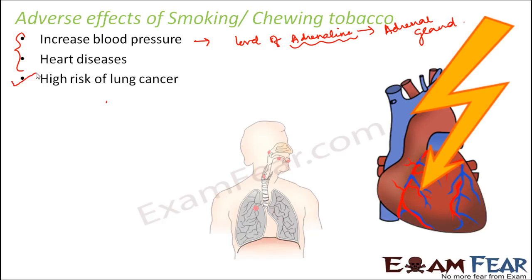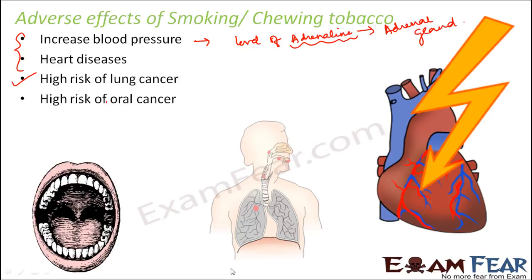Smoking also increases the risk of lung cancer. When you smoke, you are inhaling the air and it affects the respiratory tract, and the lungs are the most important organs of the respiratory system. It also increases the risk of oral cancer. Oral cancer is caused by chewing tobacco - when you chew tobacco, all the cells of your mouth are exposed to nicotine for a longer period, and as a result chewing tobacco can cause mouth cancer.